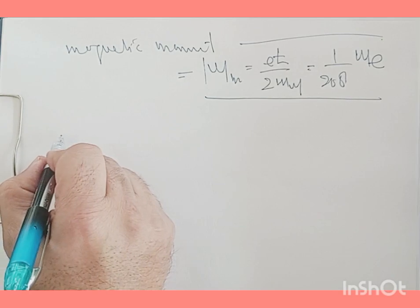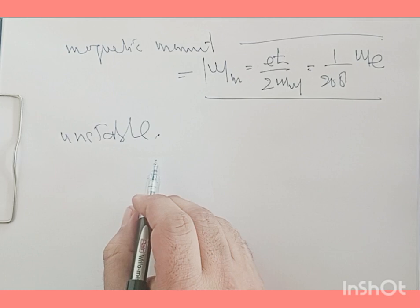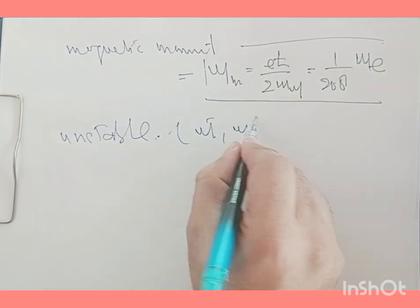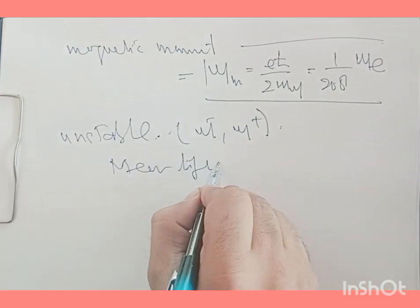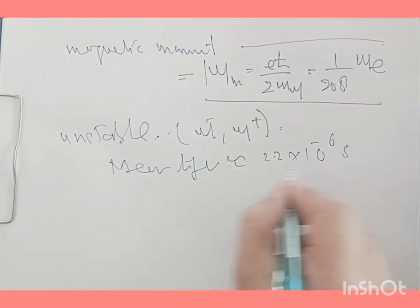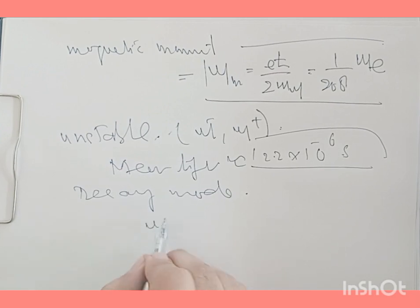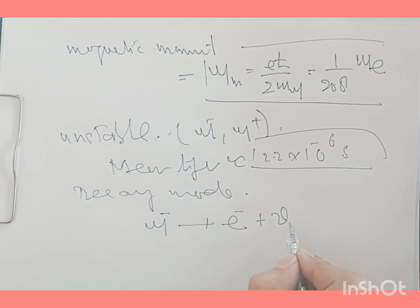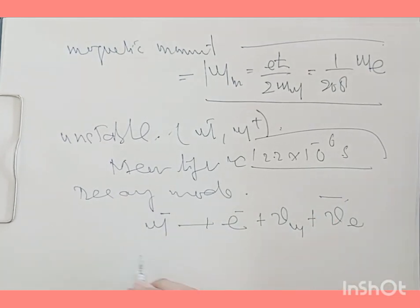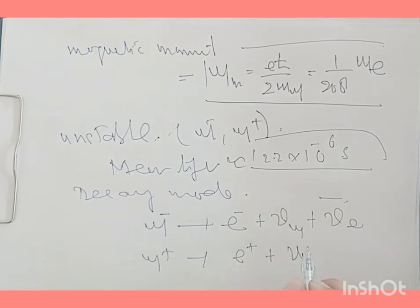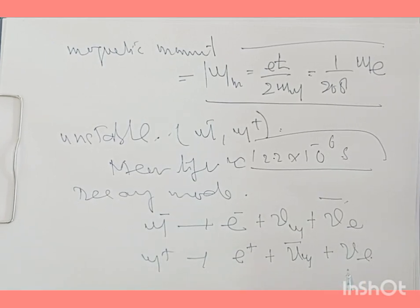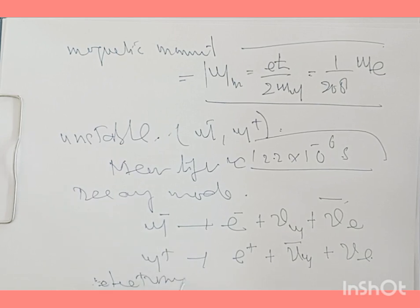The muon is an unstable particle. The mean lifetime of the muon and anti-muon is nearly 2.2 × 10⁻⁶ seconds (2.2 microseconds). The decay modes are: μ⁻ → e⁻ + ν̄_e + ν_μ, and μ⁺ → e⁺ + ν_e + ν̄_μ. Muons participate in electromagnetic as well as weak interactions.